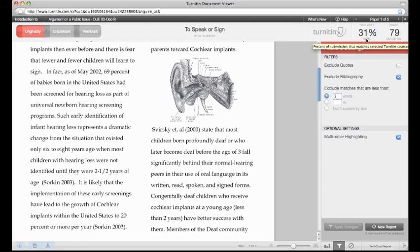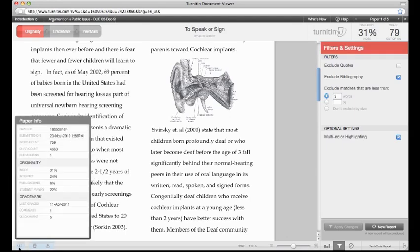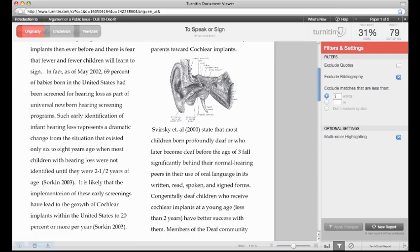Many key features of the Originality Report help instructors evaluate student work. The paper's information is available, which includes the paper ID, word count, number of submissions, along with other relevant information. Originality Reports can also be printed and downloaded.